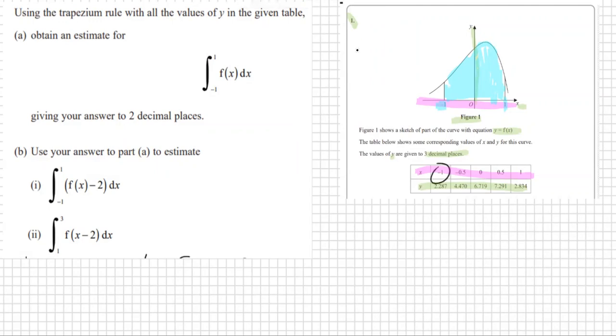So our first x was at minus 1. Our next x is at minus a half, so it would split it up to there and then 0 and so on. You're finding these areas and adding them together.